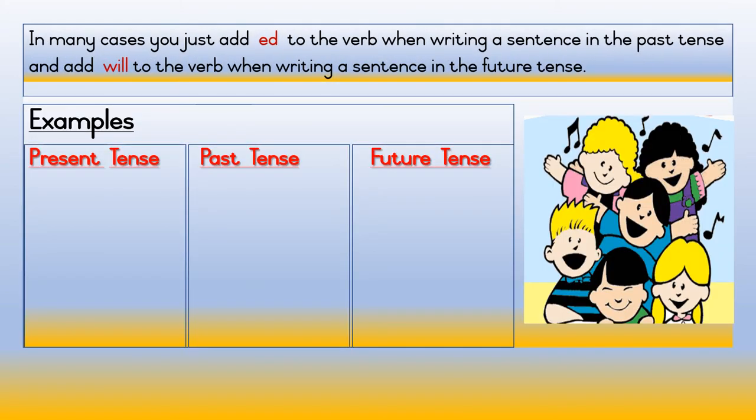In many cases you just add 'ed' to the verb when writing a sentence in the past tense, and add 'will' to the verb when writing a sentence in the future tense. Examples: